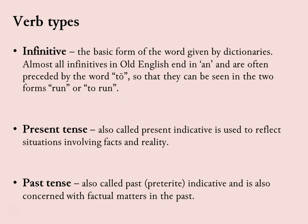Alright, let's have a look at the different types now. We have the infinitive, which is the basic form of the word given in dictionaries. The infinitives tend to end in the letters 'a-n'. They can also be preceded by the word 'to'. Basically, what that means is, for instance, the word 'run' is the infinitive, or 'to run' is the infinitive.